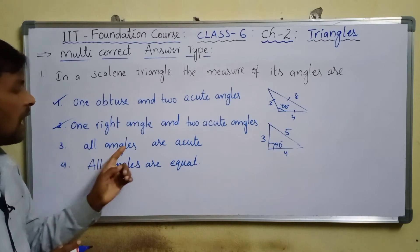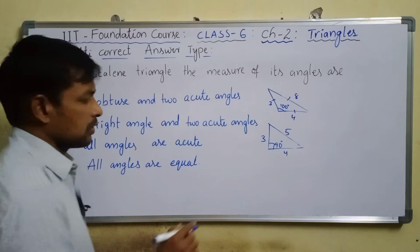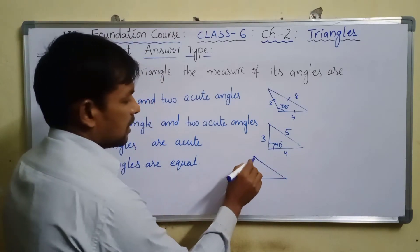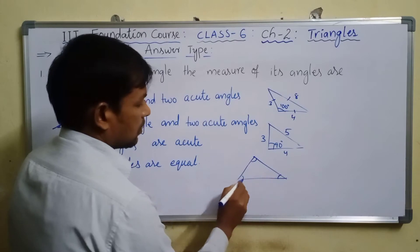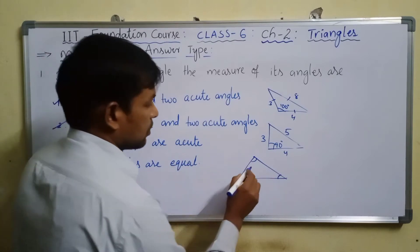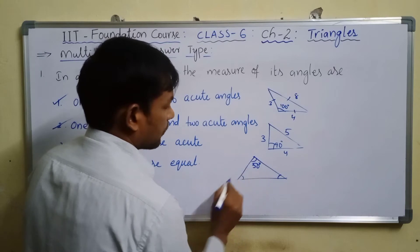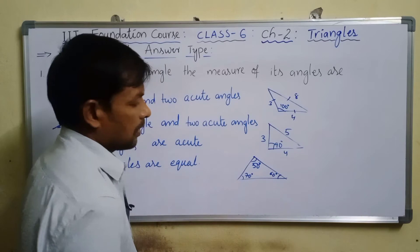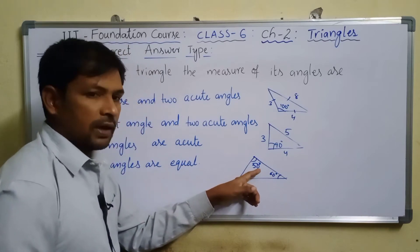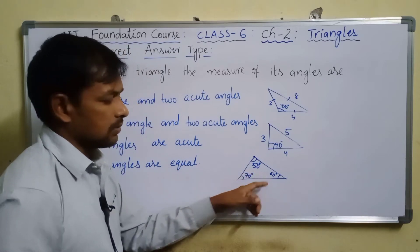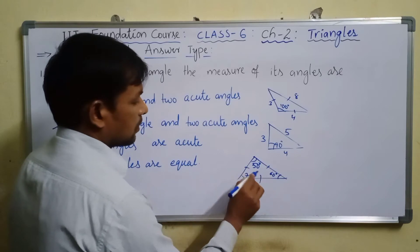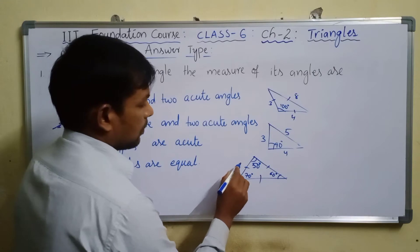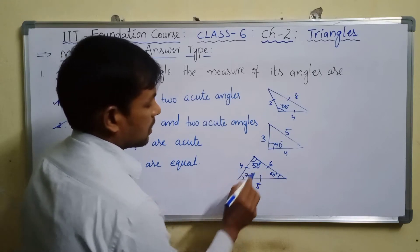For option three, all angles acute: a triangle with three different sides can have three different angles — for example 50°, 60°, and 70° — with three different side lengths like 4, 5, and 6. So all acute angles are also possible in a scalene triangle.